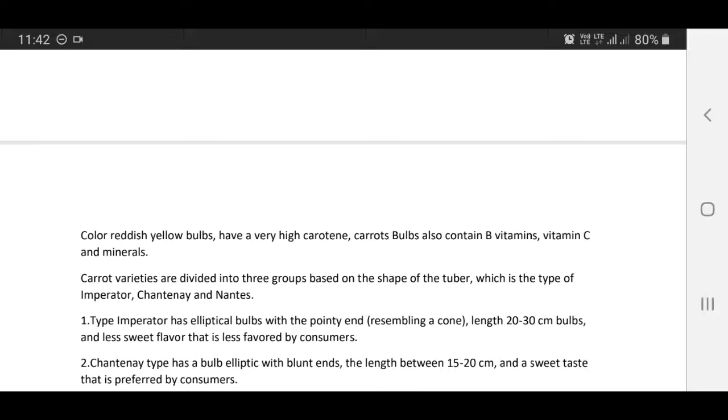Carrot varieties are divided into three groups based on the shape of tuber, which is the type of Imperator, Chantenay and Nantes.